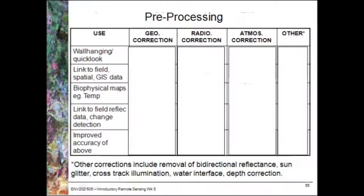The first use is if you want a wall hanging or a quick look for a particular image. Then the next one is if you'd like to link your image to field data or any other spatial GIS data. Then if you'd like to create some form of biophysical map, for example temperature or chlorophyll content. If you'd like to link to field reflectance data, perform any change detection, or if you'd like improved accuracy of any of the above.